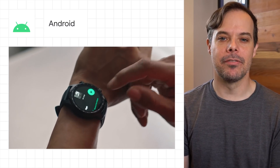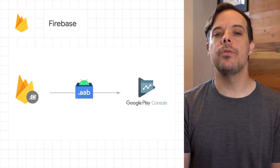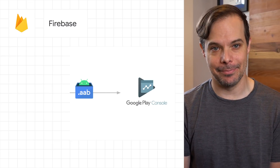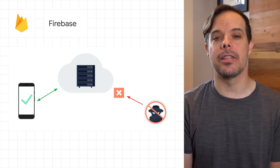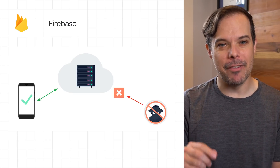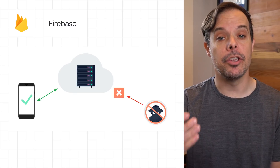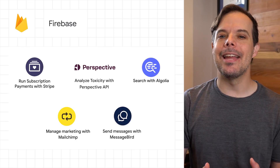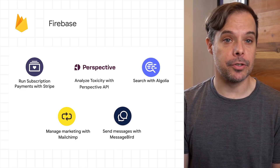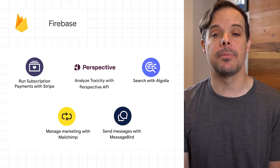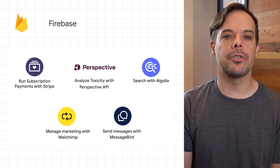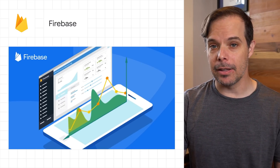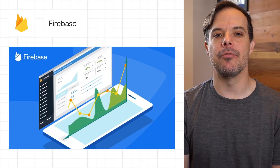Firebase had a host of new announcements as well. Firebase app distribution now supports Android app bundles for streamlined testing. App Check is an additional layer of security that protects access to your services by verifying that incoming traffic is coming from your app and blocking traffic that doesn't have valid credentials — it's now available in beta. New extensions help you implement search on Firestore with Algolia, send personalized emails to your customers with MailChimp, communicate with your users with MessageBird, and analyze user generated content with the Perspective API from Jigsaw. And finally, real time data for performance monitoring and a revamped dashboard.